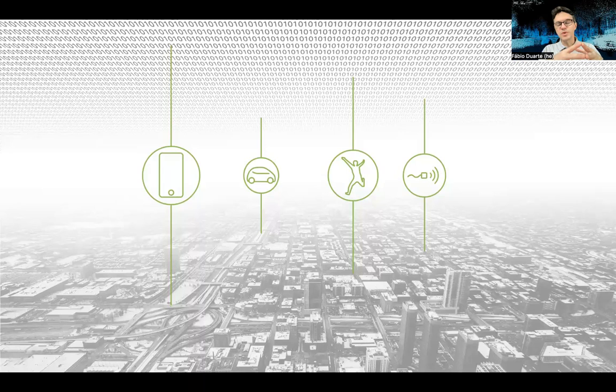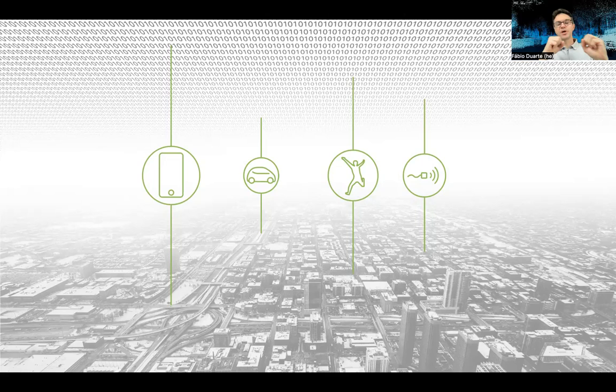We humans live between the physical and digital layers of cities. So if we want to understand urban phenomena in novel ways, we need to combine both layers — and this is what we try to do here at the Sensible City Lab. I will show you three projects, and these three projects share two main concepts. One of them is what we call opportunistic data.